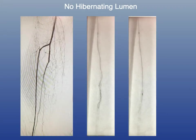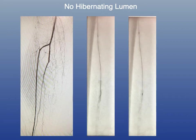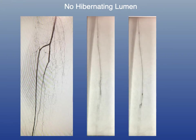What about the case of a non-hibernating lumen? This is a CLI patient with diabetes and CKD where I had to fight my way through the occlusion from start to finish. The reason is that intravascular ultrasound showed there was really no patent lumen or channel — this is an example of a non-hibernating lumen.